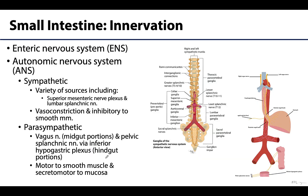The innervation of the large intestine is not tremendously different from the small intestine in terms of function. The large intestine also has the enteric nervous system. For overall autonomics, sympathetics come from a multitude of sources, including the superior mesenteric nerve plexus, which contains both parasympathetic and sympathetic fibers that play a role in innervating the large intestine.